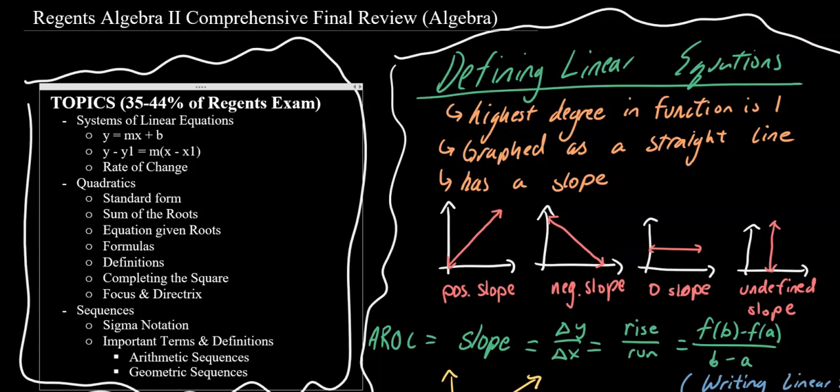35 to 44% of your Regents examination will be on this unit — algebra. We're going to go over linear equations, quadratics, and sequences and series. There's also a super important topic, focus and directrix, that will definitely be on your Regents exam and has been for years now. But firstly, let's look at some linear stuff.